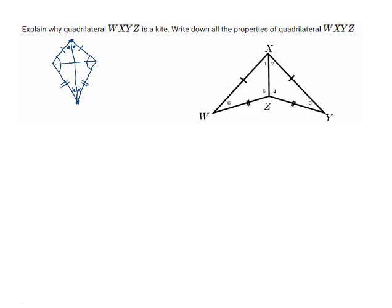If we draw in the horizontal diagonal, it will meet the vertical diagonal at a 90 degree angle and it will also be bisected.